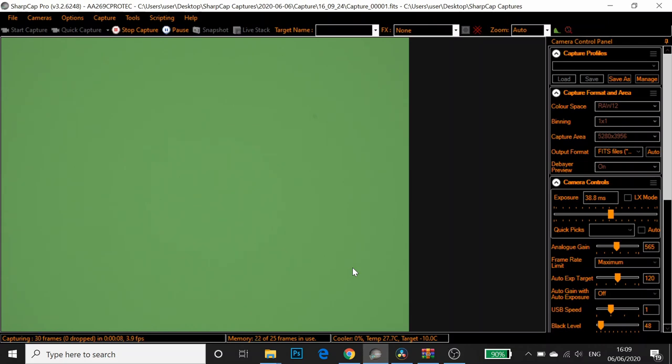So these will be my flat frames. And once I've done these, I'll take the iPad off the end of the telescope and I'll place the cap on and I'll leave the settings exactly the same. And I'll shoot my dark flats.